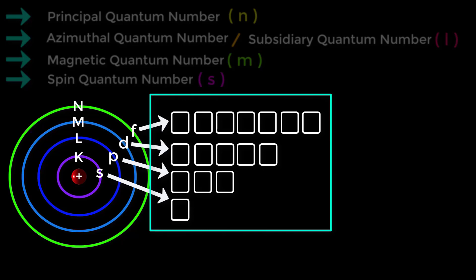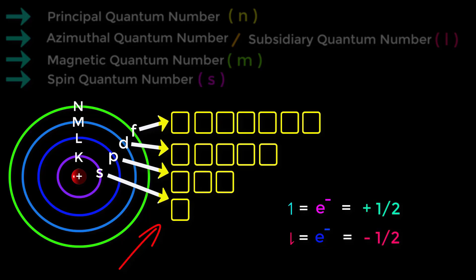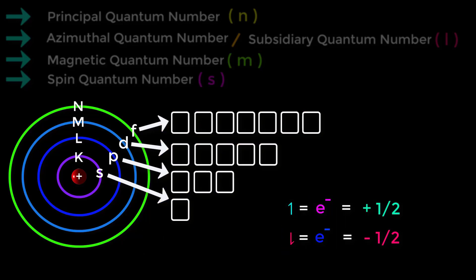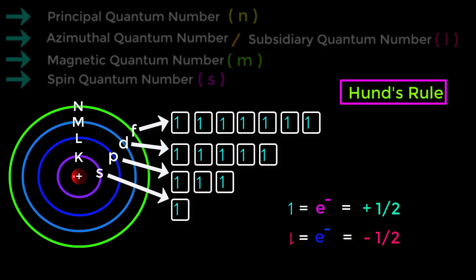In these orbitals, electrons spin either clockwise or anticlockwise. Clockwise means upward direction — this indicates one electron and its value is plus half. Anticlockwise means downward direction — this indicates one electron and its value is minus half. Each orbital has the ability of holding only two electrons. According to Hund's rule, at first a single electron occupies each of the empty orbitals having the same spin, and then the remaining electrons occupy the orbitals with paired spin.